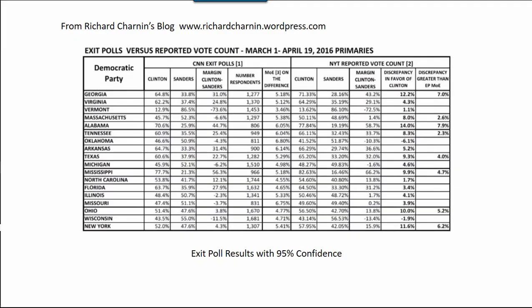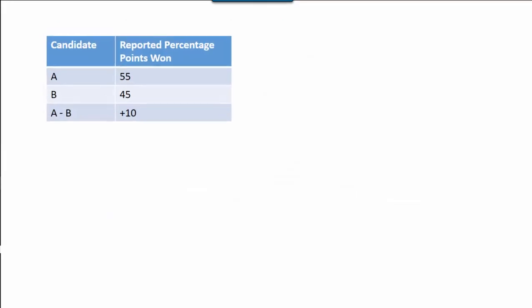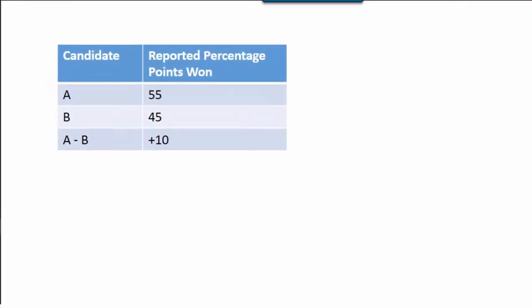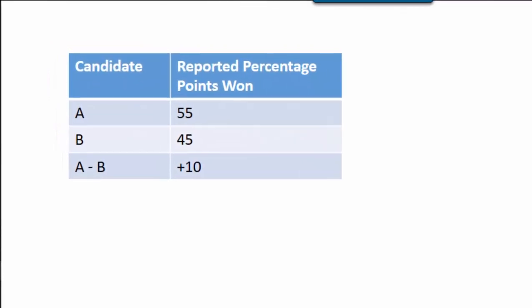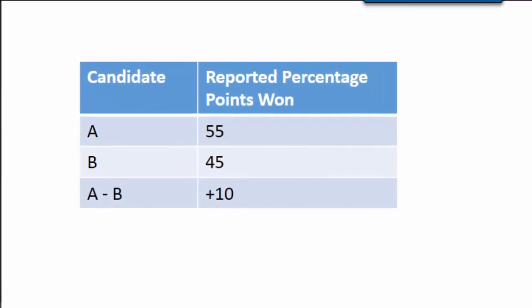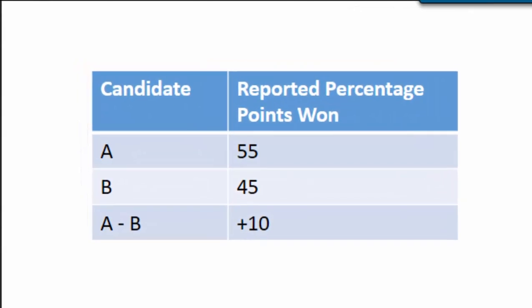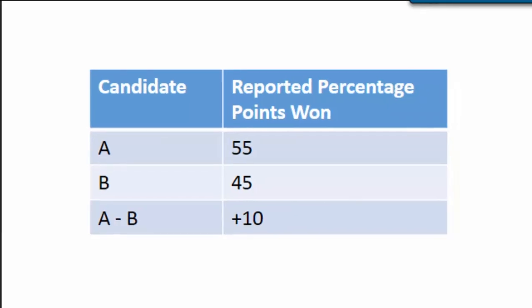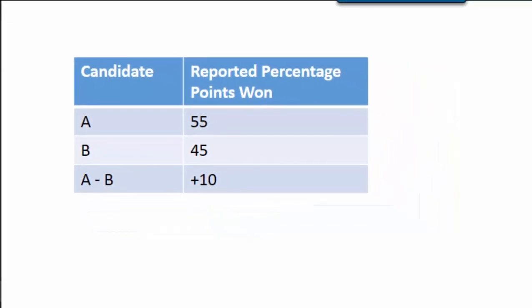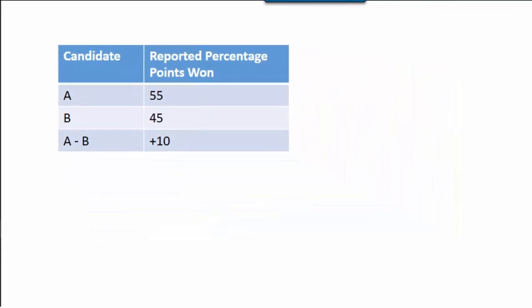One of the examples we'll look at comes from Richard Charnin's blog, where he discusses the probability of election fraud. But before we get to his data, let's take a look at a simpler example. Suppose that we have candidate A and candidate B in an election. The actual results are that candidate A wins 55% of the vote and candidate B wins 45%, meaning that the difference, A minus B, is positive 10 — candidate A has exceeded candidate B by 10 percentage points.